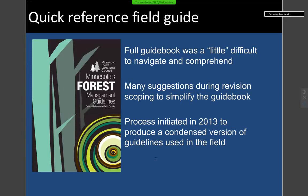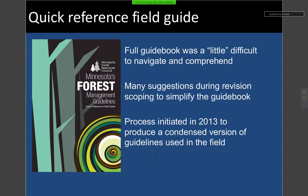Switching gears to the quick reference guide: during the revision process and scoping, we had a lot of recommendations from stakeholders to simplify the guidelines. The old gold book — the full set of guidelines — is a very hefty tome of knowledge. It's dense and could be organized better, making it challenging to extract the information people need when they're actually in the field applying these guidelines. The council was very much on board with developing a field guide. Back in 2013, shortly after we finished the revision, we initiated a process to develop this field guide, which has been published about four months ago.